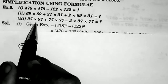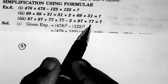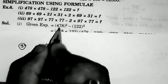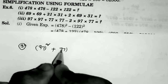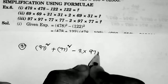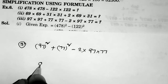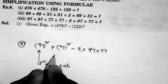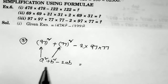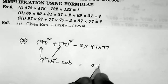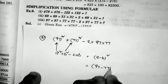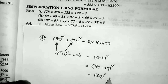Third sum: 97 × 97 + 77 × 77 − 2 × 97 × 77. This is in the form a² + b² − 2ab, where a = 97 and b = 77. The formula gives (a − b)² = (97 − 77)² = 20² = 400. That is the answer.